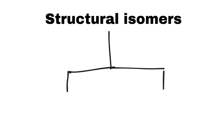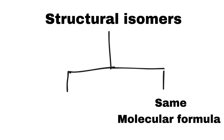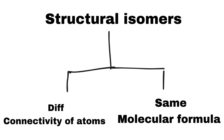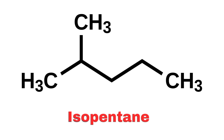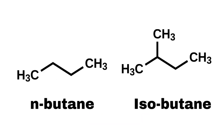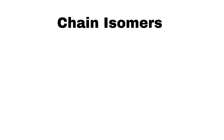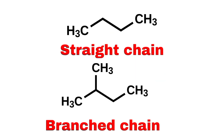Structural isomers have the same molecular formula but different connectivity of atoms, meaning the atoms are bonded together in different ways, leading to different structures. It is further classified into chain isomers, which differ in the arrangement of the carbon chain — for example, straight-chain and branched-chain compounds.